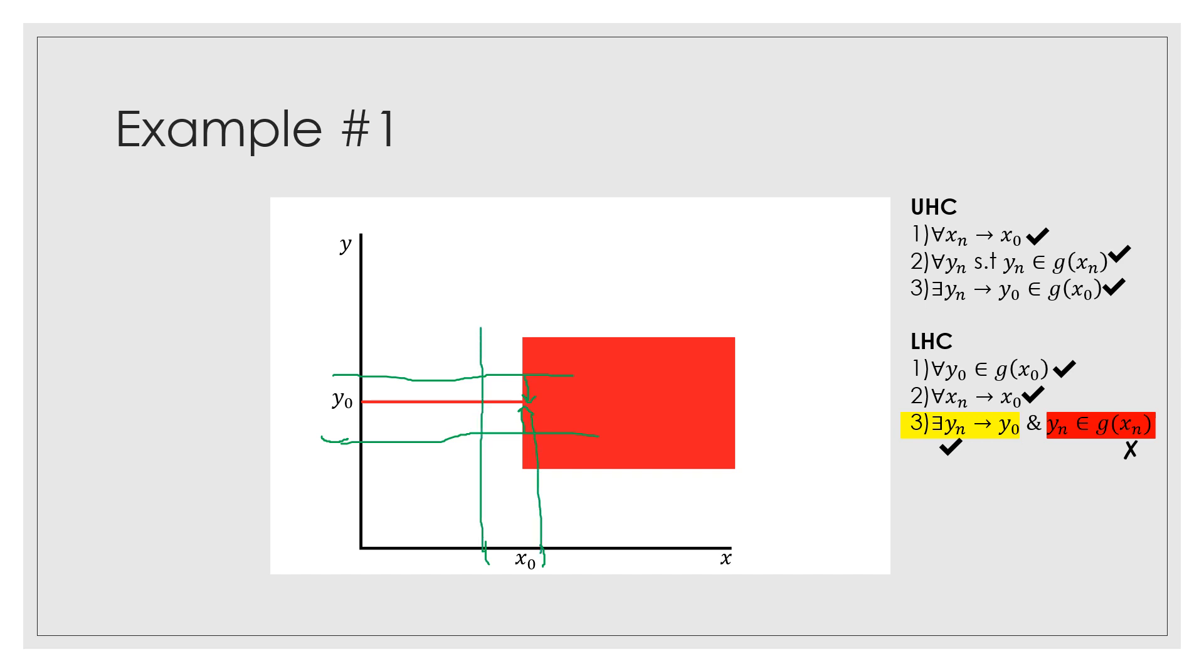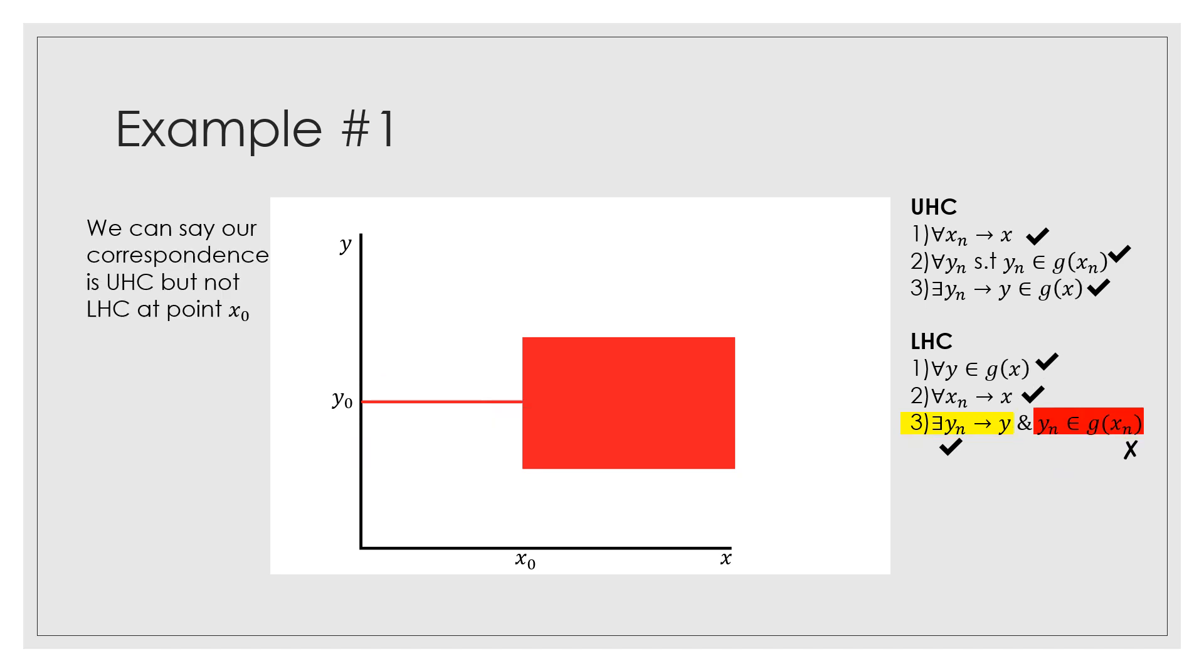Right? Let's call that the yₙ point that is not in our correspondence. So that's why we have this guy here, right? This is why we have that problem. So just to conclude, we can say that our correspondence is upper hemicontinuous but not lower hemicontinuous at point x₀. I hope this example video helps you. Take care.